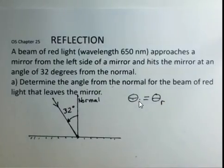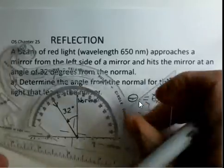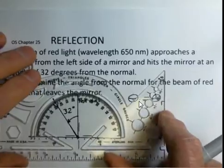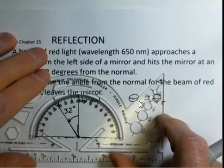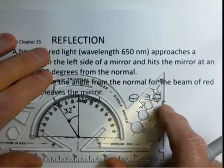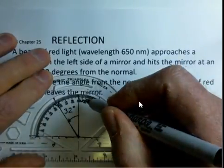The wavelength is not part of the calculation. Notice. So 32 degrees. If we have 32 degrees for the angle, for the ray coming in, then we need 32 degrees for the ray going out.